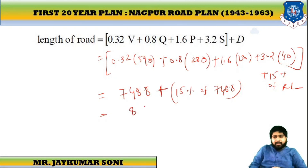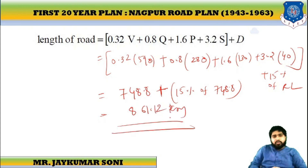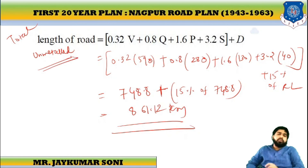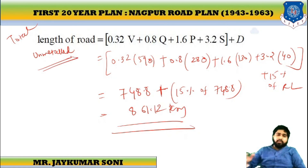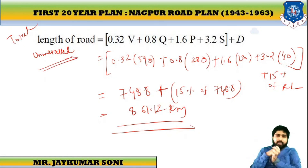So the total length of unmetal road is 851.1 km. This is how we calculate the total and additional road lengths using the NACU Road plan formula.